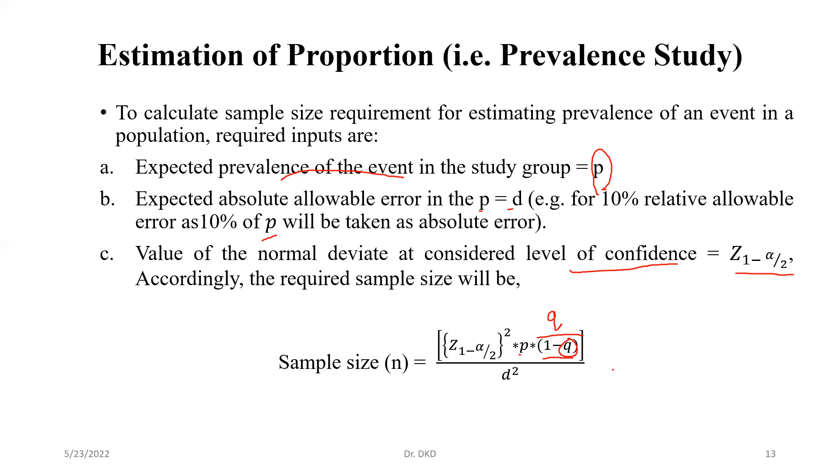We can understand with the help of an example. Suppose the current prevalence of malaria in a community is expected to be around 40%. Hence to estimate the current prevalence of malaria in that community, it is 40% already reported. But we want to estimate the current prevalence of malaria in that particular community. For that, how many persons should be included in the study at 5% level of significance and absolute allowable error as 10%?